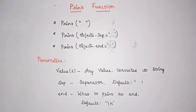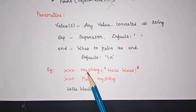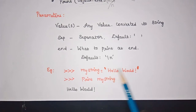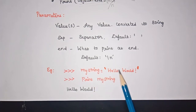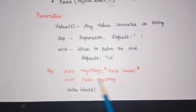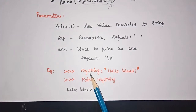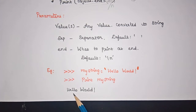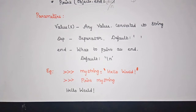Now we will see some examples for the print statement. In the first example, I have a variable called my_string assigned the value 'Hello World' within quotation marks. my_string is a variable containing the string value 'Hello World'. To print it, I give print(my_string) — whatever is inside my_string gets printed as output, which is Hello World.